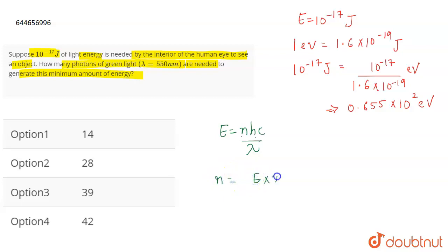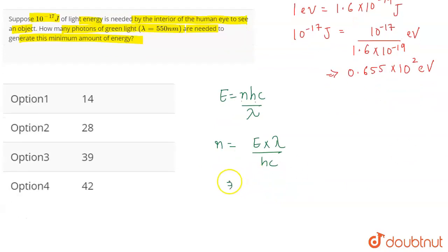So, we have to find the value of N. N will be equal to E into lambda divided by H C. Energy is 0.655 into 10 to the power 2.